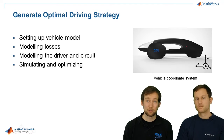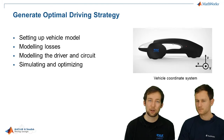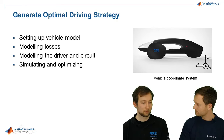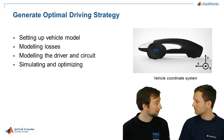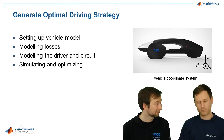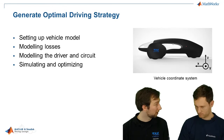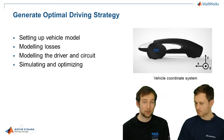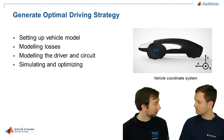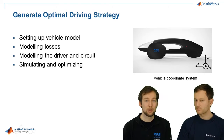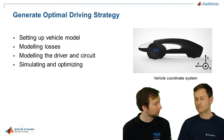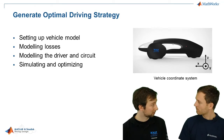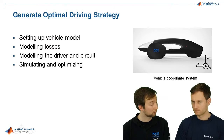How can you generate an optimum driving strategy? That's the first point of our cruise control. First, set up a vehicle model. The critical point is to validate it — you should always make it as complex as you can validate, because without validation it makes no sense to simulate. The key for us is modeling losses, because the sum of the losses determines the amount of energy used. Next is modeling the driver. In our case we model a very good driver, and then you have to model the circuit. Our strategies are always track-specific — you can't use one strategy for more than one track.